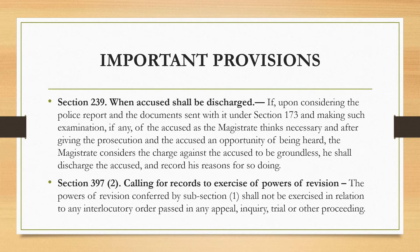And what is Section 397? Section 397 provides powers of revision to the High Court. The High Court can look into the correctness, legality or propriety of any finding, sentence or order recorded or passed by any inferior court. But what is important for us is Section 397 subsection 2. It states that the powers of revision conferred by subsection 1 shall not be exercised in relation to any interlocutory order passed in any appeal, inquiry, trial or other proceeding. Basically, the powers of revision cannot be exercised in relation to any interlocutory order. And what is an interlocutory order? It has not been defined anywhere in the CrPC. A general meaning of interlocutory order is any order that is interim in nature, or that is only for the time being. So in relation to such orders, powers of revision cannot be exercised under Section 397.